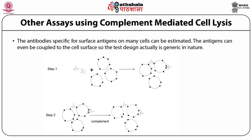The test antibody is incubated with the antigen bearing cells. Complement is added and cell lysis is measured by any of the methods discussed earlier. Cell lysis occurs by the classical pathway of complement activation. The degree of lysis is limited by the concentration of test antibody, as only those cells will be lysed which have antibody bound to them. A standard curve with known antibody concentration can be generated to plot antibody concentration versus degree of cell lysis. The above test will work only with the complement activated isotype of Ig — IgM and some sub-isotypes of Ig.